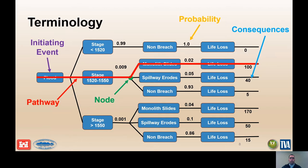Given failure or breach occurs, the resulting consequences — in this case life loss — are shown in the last column. A node is a branching point at which a new random variable is introduced in the event tree. A pathway is a unique set of events through the event tree that leads to failure or breach. In this example, there are four pathways that lead to breach: monolith sliding, spillway erosion for this load range, and monolith sliding and spillway erosion for the other load range.